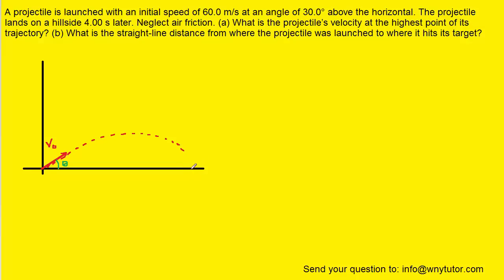In part A, it's asking us for the projectile's velocity at the highest point of its trajectory. Going back to our diagram, we can mark the highest point right here. When solving a projectile motion question, it's a good idea to first identify your initial and final positions. The initial position is at the launch point, and for part A the final position is at that marked point. After doing that, we're going to organize the information into a table.